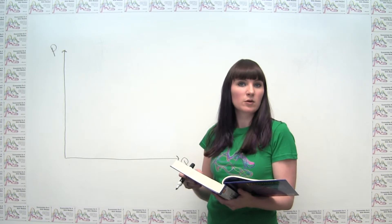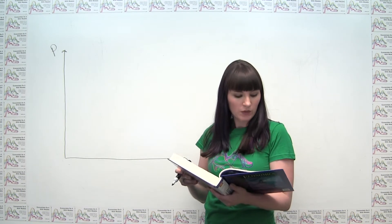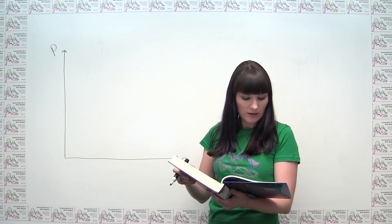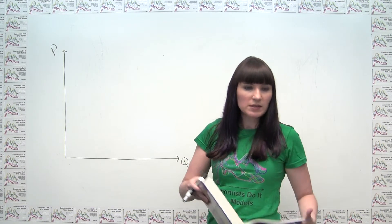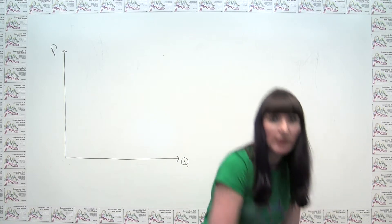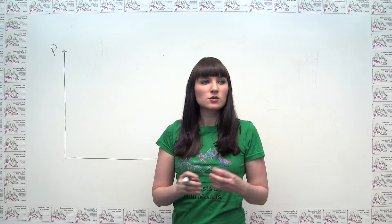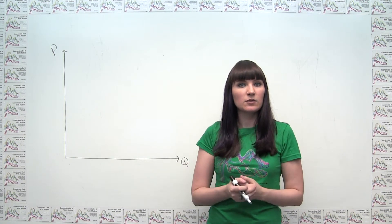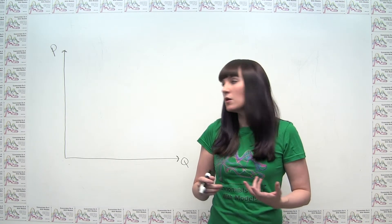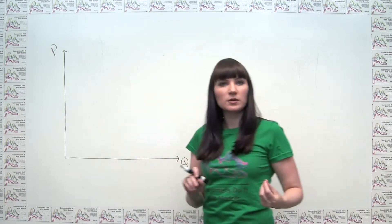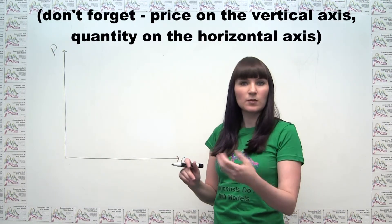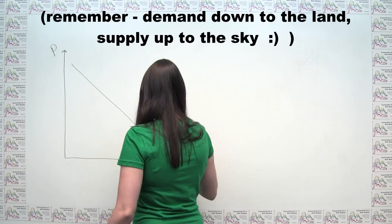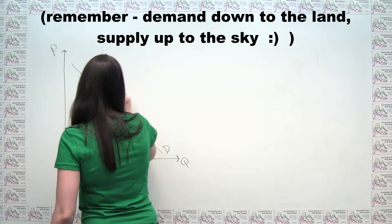Part A of the problem tells us that we're looking at the market for furniture. It says that the price of furniture rises as the quantity bought and sold falls. So we need to think about what curve shifts could actually make that happen — we have an increase in equilibrium price and a decrease in equilibrium quantity. We can start by drawing our typical supply and demand curves and then thinking about how we need to shift these.